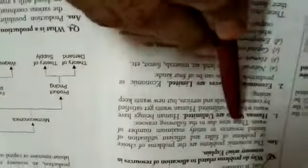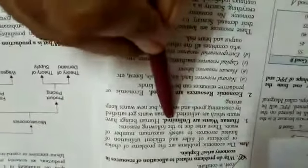Why do problems arise? Why do problems related to allocation of resources in an economy arise? The economic problems are the problems of choice or problems of fuller and efficient utilization of limited resources to satisfy maximum number of wants. These arise due to the following reasons.